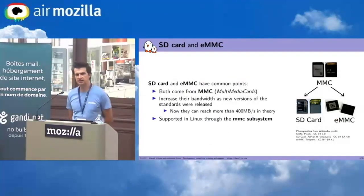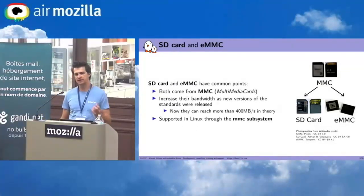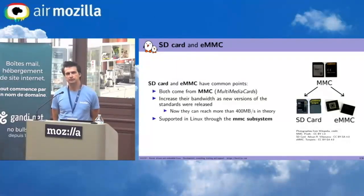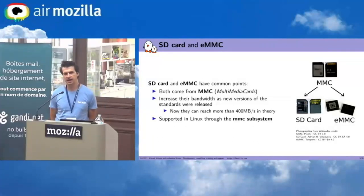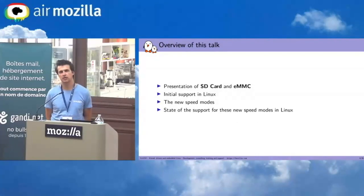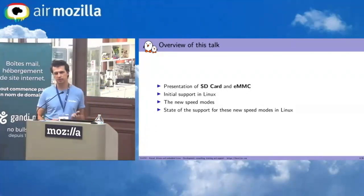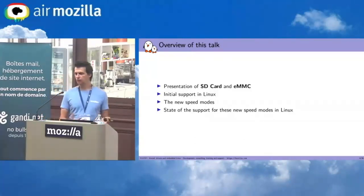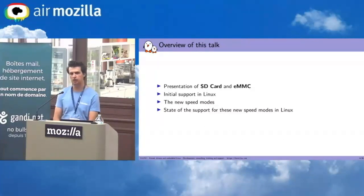We are going to talk about SD card and eMMC. First, these two have common things — both come from MMC. With time, they increased bandwidth with new versions, and now they can reach 400 megabytes per second in theory. They are both supported in Linux through the MMC subsystem. We'll cover what SD card and eMMC are, the initial Linux support, and then focus on the new speed modes and their support status in Linux.